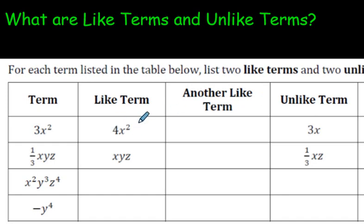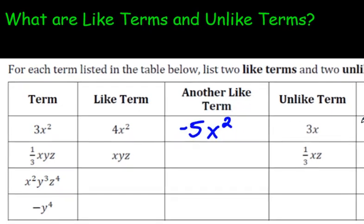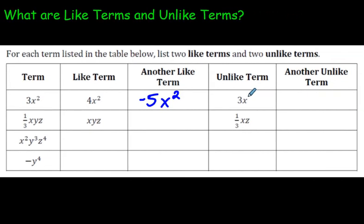So another like term to this one, another like term to the 3x² would be, negative 5x². That is another like term. An unlike term is 3x. Let's make another unlike term. 4, I just randomly picked a 4, and a y. See how these are different? The x and the y are different. Basically anything I write here would be an unlike term unless it had an x² in it.